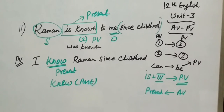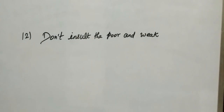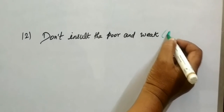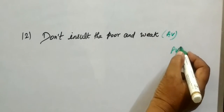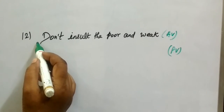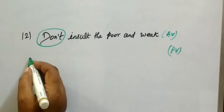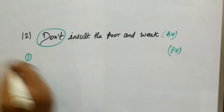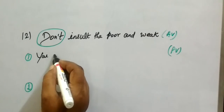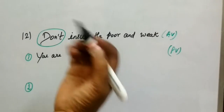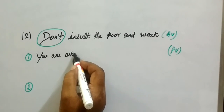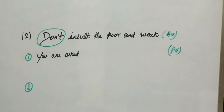Question number 12: Don't insult the poor and weak. This is definitely active voice. For imperative sentences with 'don't,' you can write it in two ways. First way: You are requested, asked, or advised not to insult the poor and weak.